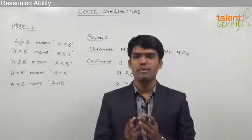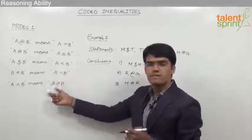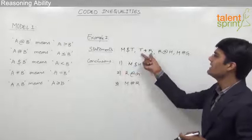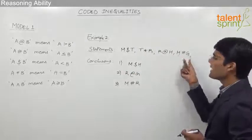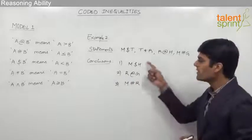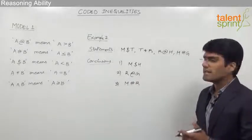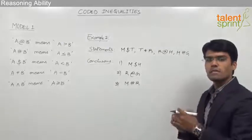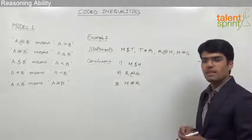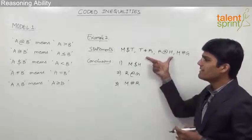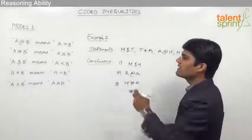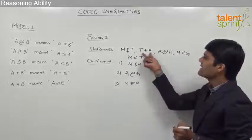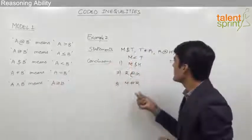Let us take the second example. The same symbols apply; only statements and conclusions have changed. The statements are N $ T, T * R, R @ H, and H # G. Replacing symbols: N < T, T = R, R > H, and H ≤ G. So the consolidated statement is: N < T = R > H ≤ G.